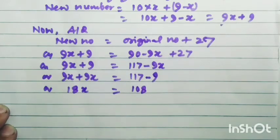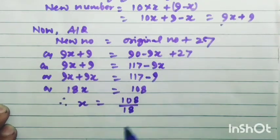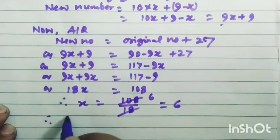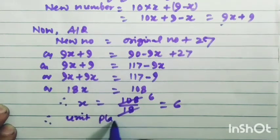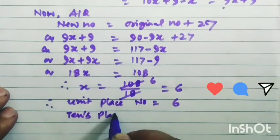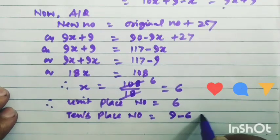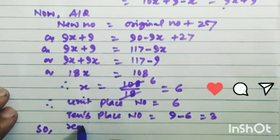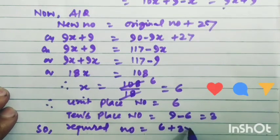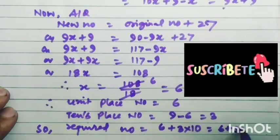Therefore, x equals 108 divided by 18, which equals 6. So the units place digit is 6, and the tens place digit equals 9 minus 6 equals 3. So the required number equals 6 plus 3 into 10, which equals 6 plus 30, equal to 36.